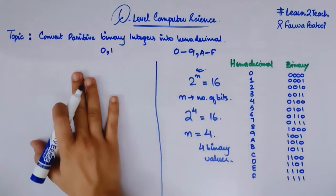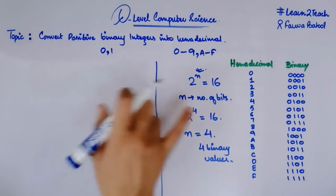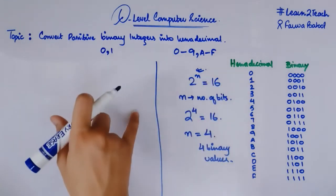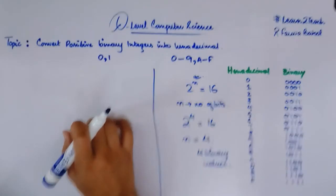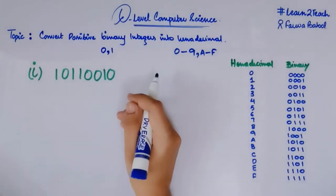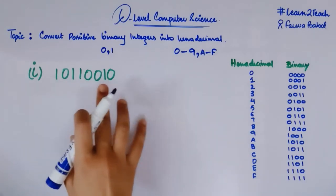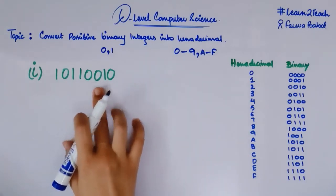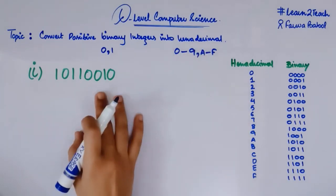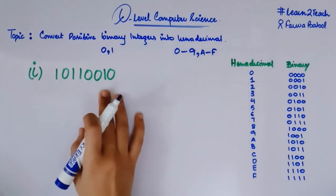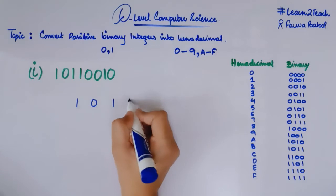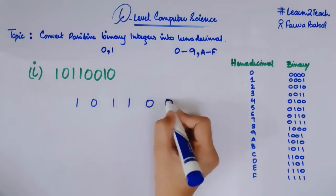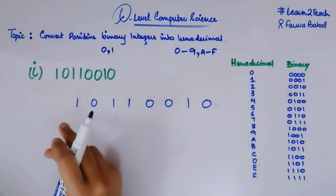Now moving towards examples. We will see different examples of conversion using this table so you can better understand how to convert binary to hexadecimal. In example number one, I have a binary integer: 1 0 1 1 0 0 1 0, and I need to convert it into hexadecimal.